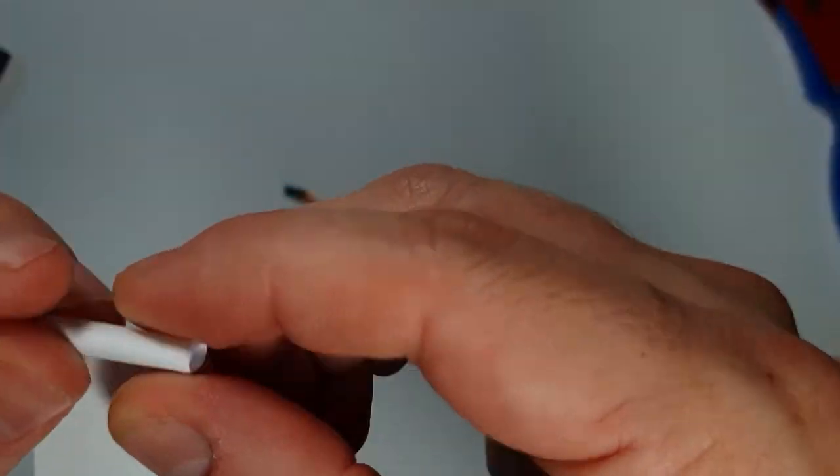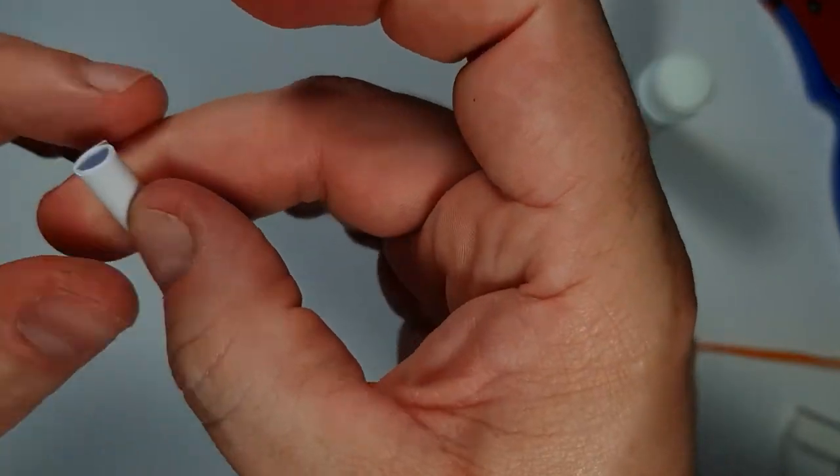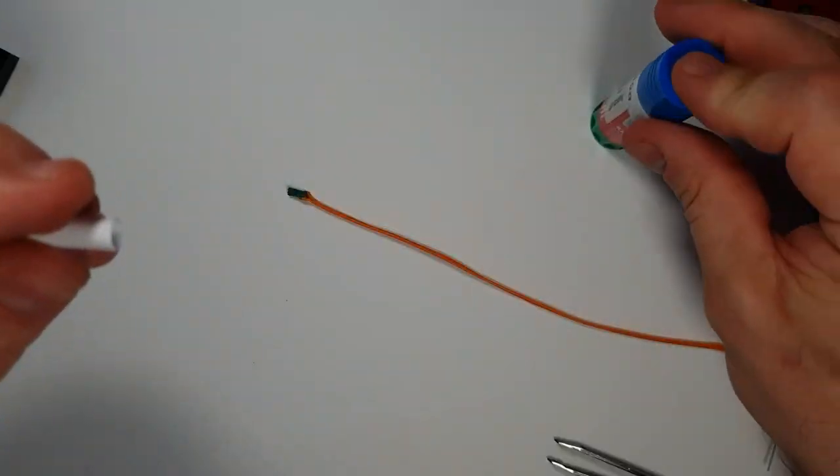I usually use gummed tape, but if you have no access to it, I think everyone knows how to make a paper tube. I just make it and then insert this ready e-match.